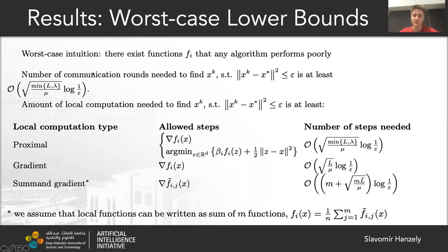Lower bounds, for the worst case, means that there is no algorithm that can minimize a set of smooth strongly convex local functions faster than these rates. Here is the lower bound on the amount of local computation and on the communication rounds, and here is the lower bound for the number of local computations. The amount of local computation depends on what steps the algorithm requires devices to do. We obtain these bounds by finding the worst-case function, which is actually very simple — in fact, quadratic.